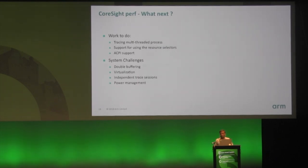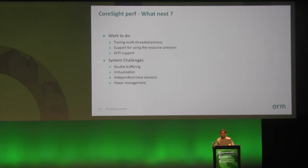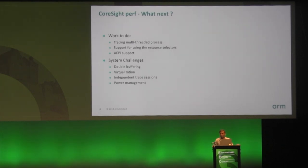The next challenge is virtualization. You can't really use CoreSight inside a guest, because the moment you give control to the guest it can compromise the hypervisor unless you track and emulate every single access, which is not optimal. We need architectural changes to make sure a guest can safely use CoreSight without much performance impact. Additionally, you cannot have multiple processes running and tracing different subsystems because of the topology — the current state of designs typically has a single ETR.